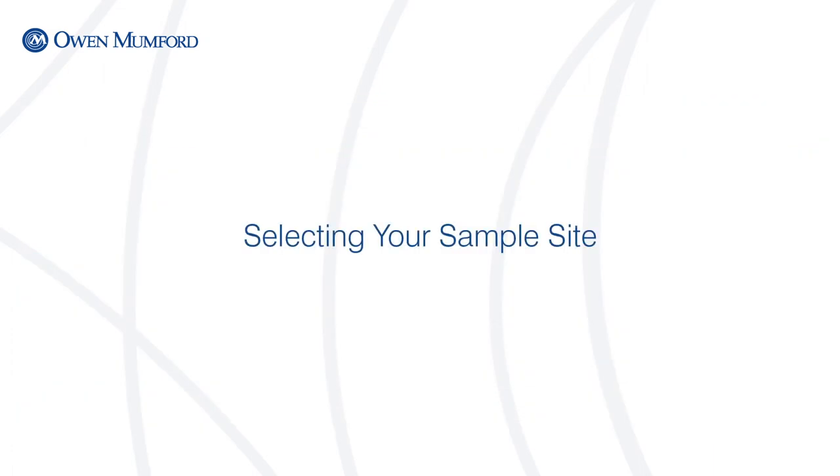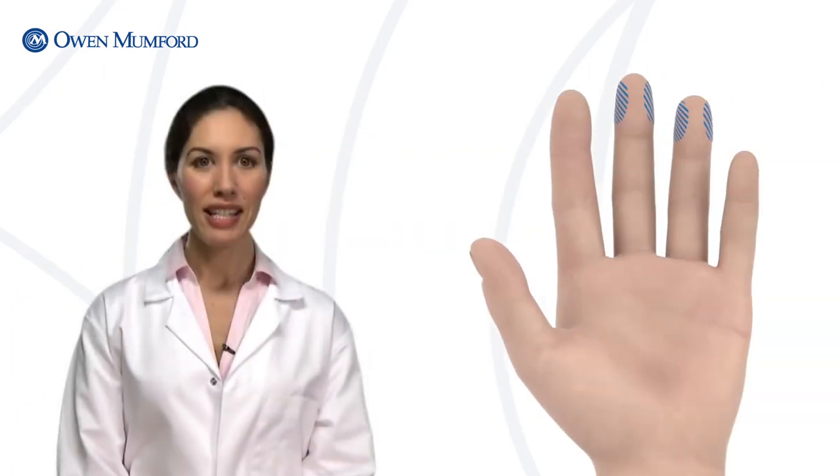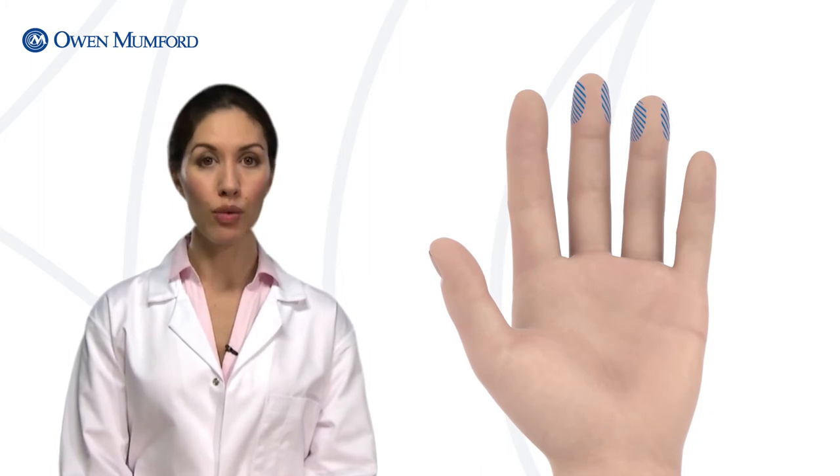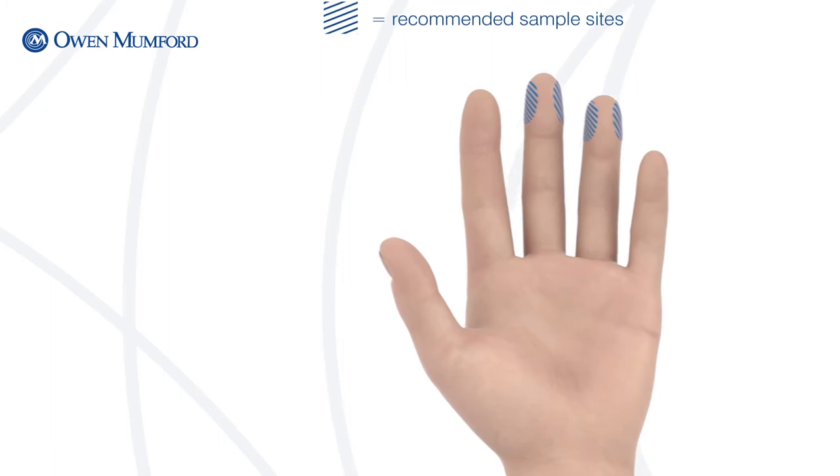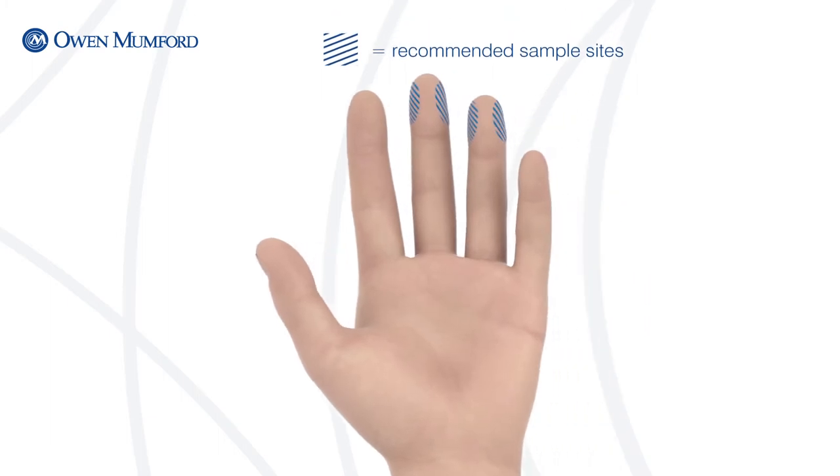When performing a finger stick, site selection is critical. Testing should be performed on the middle or ring finger of the non-dominant hand. A viable testing site will appear warm and pink in color. The puncture should be made slightly off-center within the fleshy part of the fingertip.